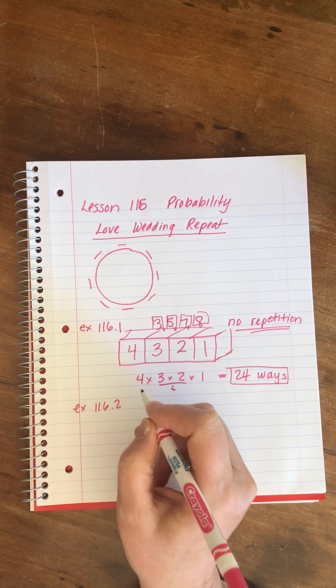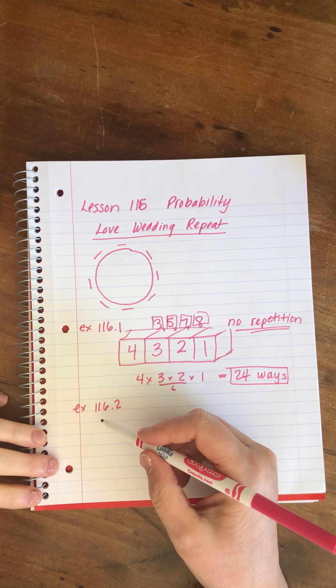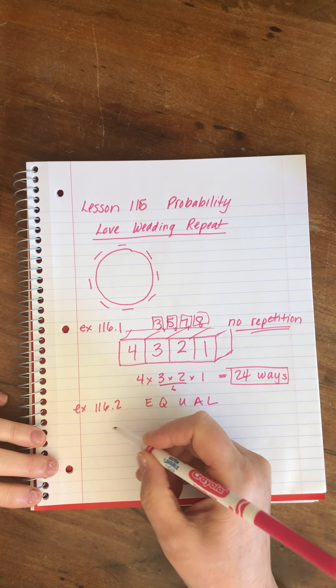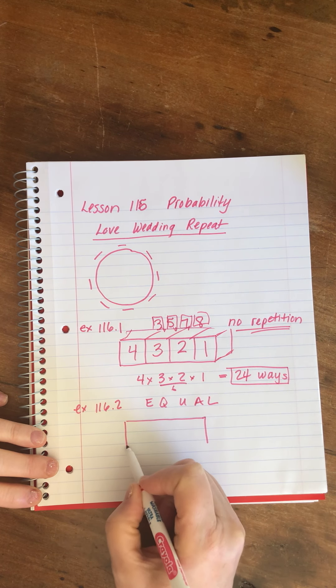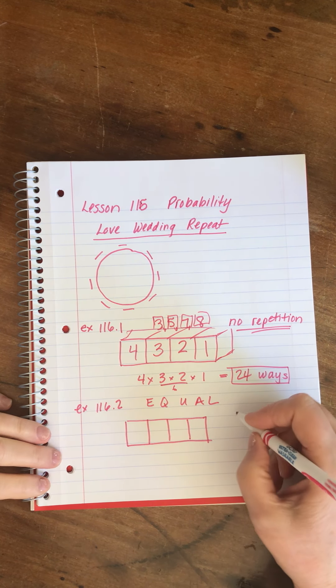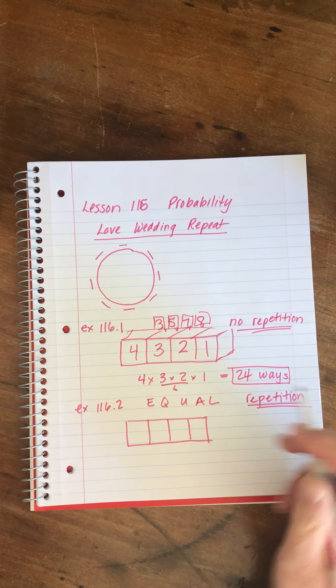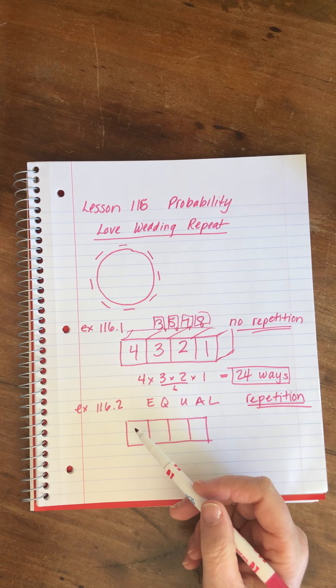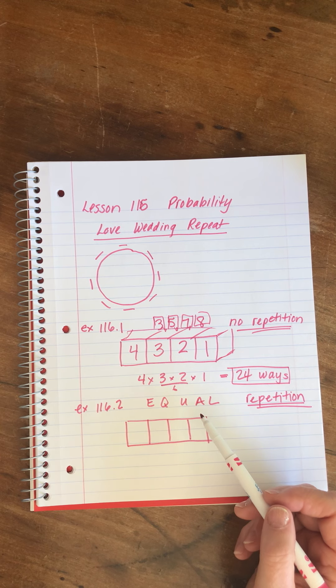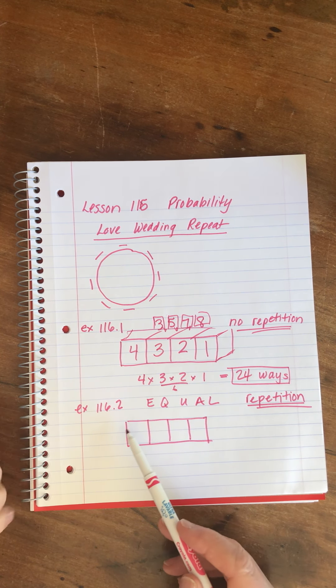How many four-letter signs can be made from the letters of the word equal? The letters of the word equal, there are five of them, but it says how many four-letter signs? So even though we have five letters, we have four spaces that we're trying to build up. Last time we said no repetition, this time we're saying repetition is okay. This time imagine these are like Scrabble letters. There's more than one tile of each letter.